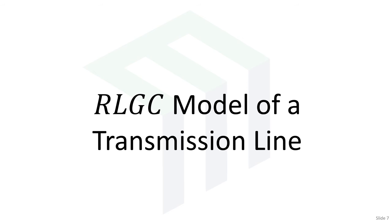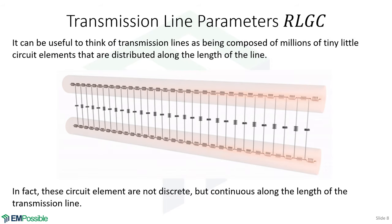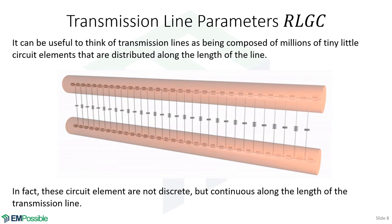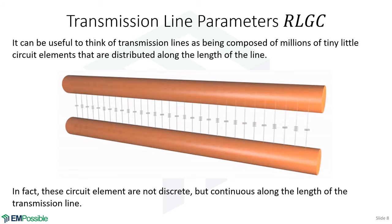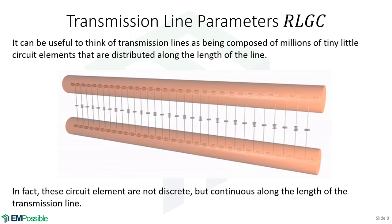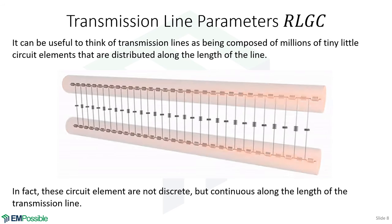Let's talk about the RLGC model of a transmission line, which we'll use throughout this course. Here I'm showing two copper wires, fading between a circuit model and the transmission line. This transmission line acts like a smearing of resistance, inductance, and capacitance. We're going to look at it as discrete little circuit elements, but in fact the resistance, inductance, and capacitance are smeared and continuous along the lines. We will treat them as discrete elements by making the size of those elements very, very small.